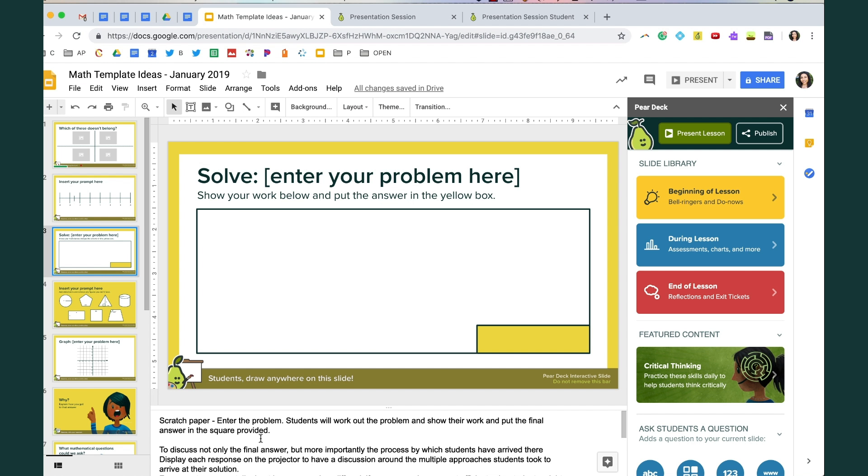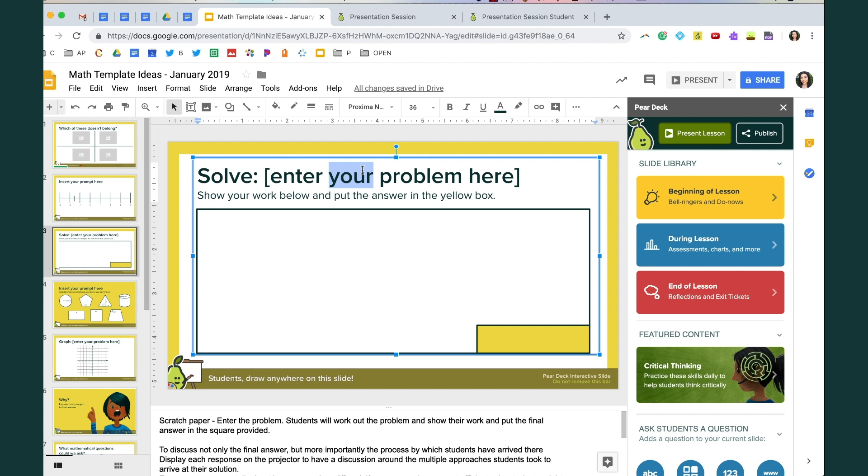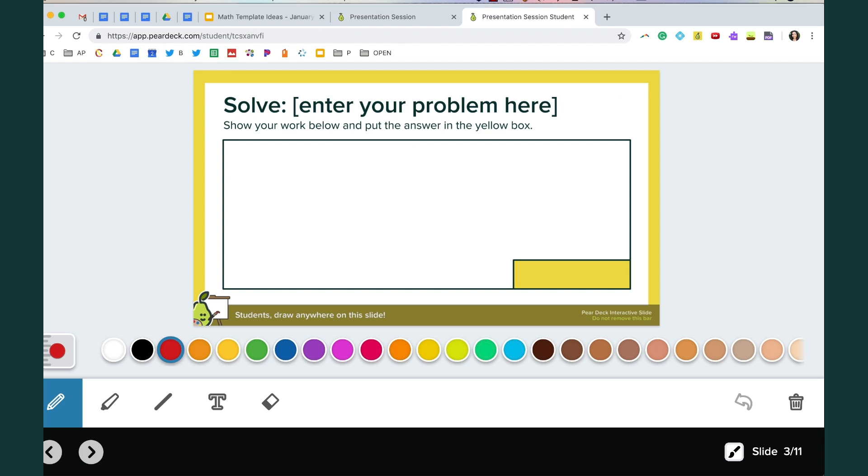This next question type I see as a way to not just discuss a final answer but more importantly the process by which students have arrived there. So this asks solve and you would enter your problem here. Show your work below and put the answer in the yellow box. This again is a drawing type question.